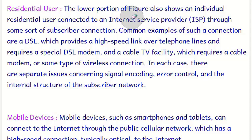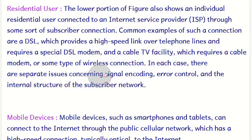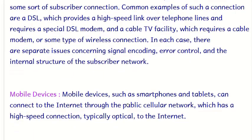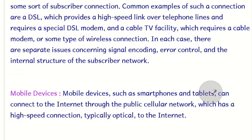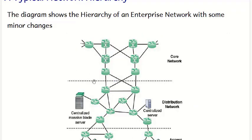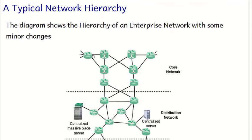Common examples of residential connections are DSL, high-speed links over telephone lines, or cable TV facilities. In each case there are separate issues concerning signal encoding, error control, etc. Mobile devices such as smartphones and tablets can be connected to the internet through public cellular networks, which can provide high-speed connections.